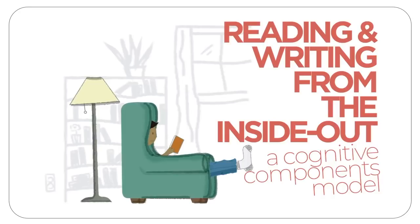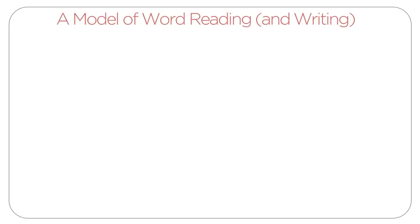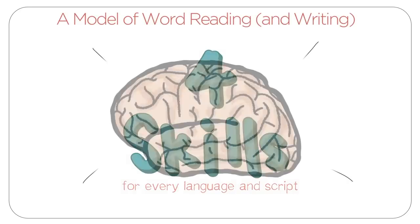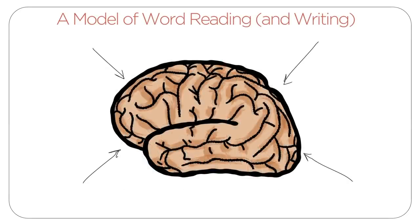Reading and Writing from the Inside Out: A Cognitive Components Model. Every model of word reading must include at least four skills. This is true for every language and script. These four skills all work together.